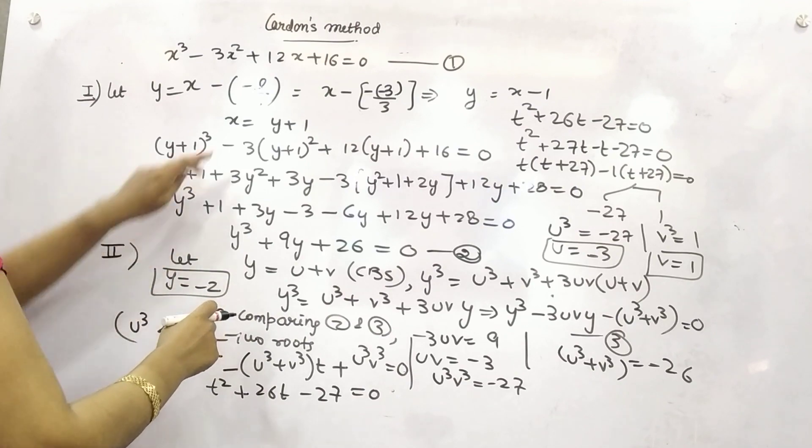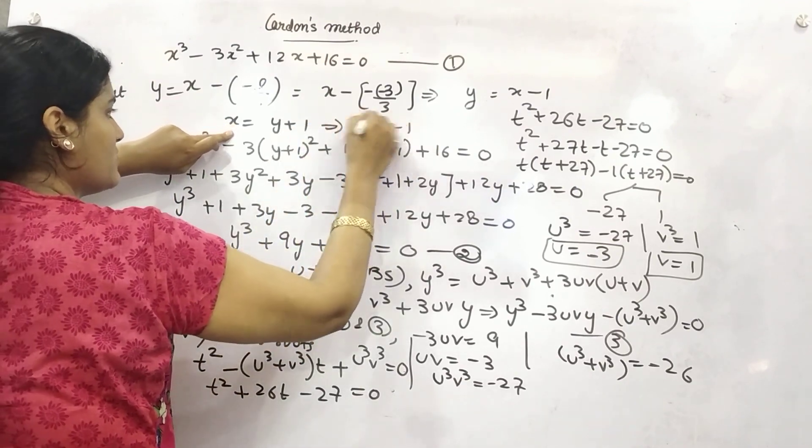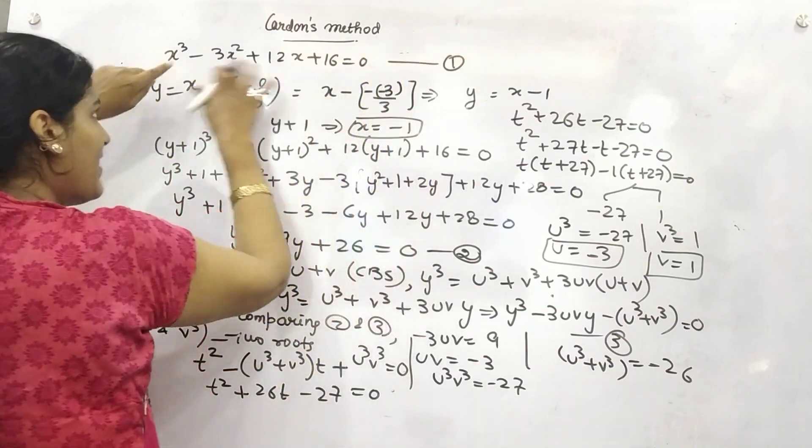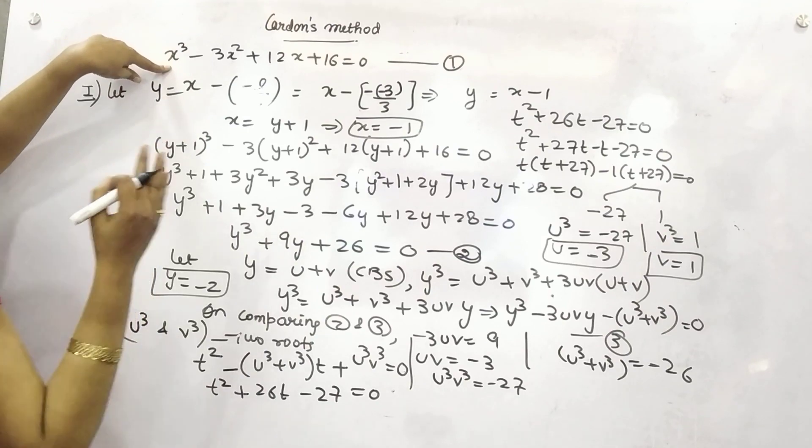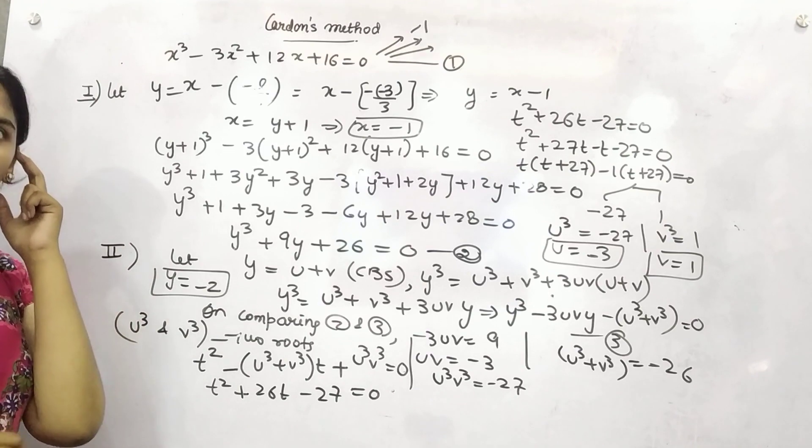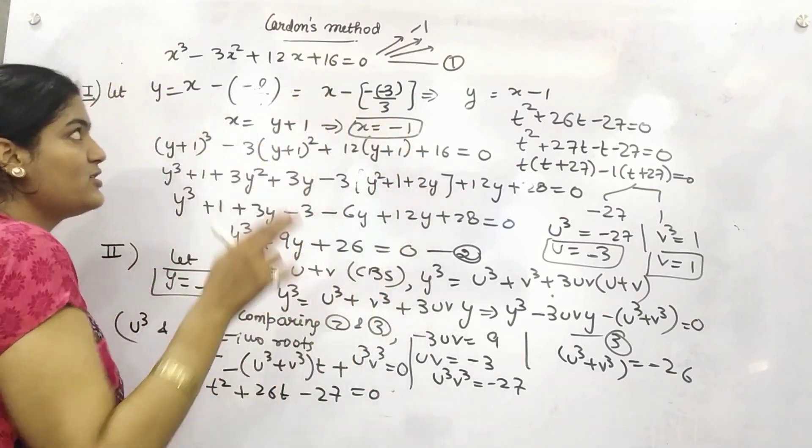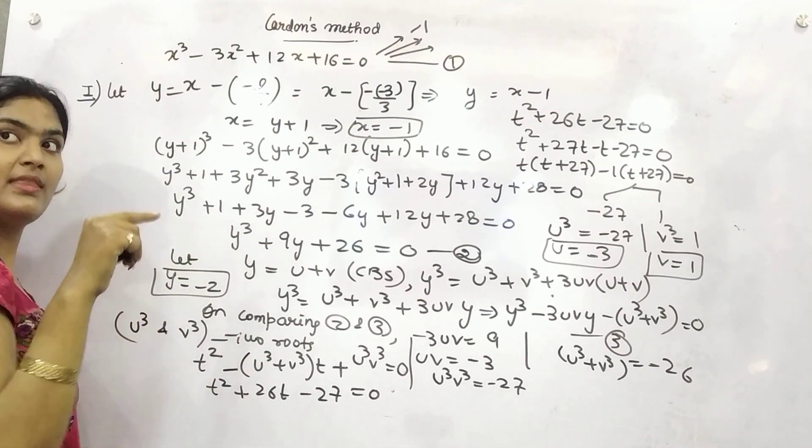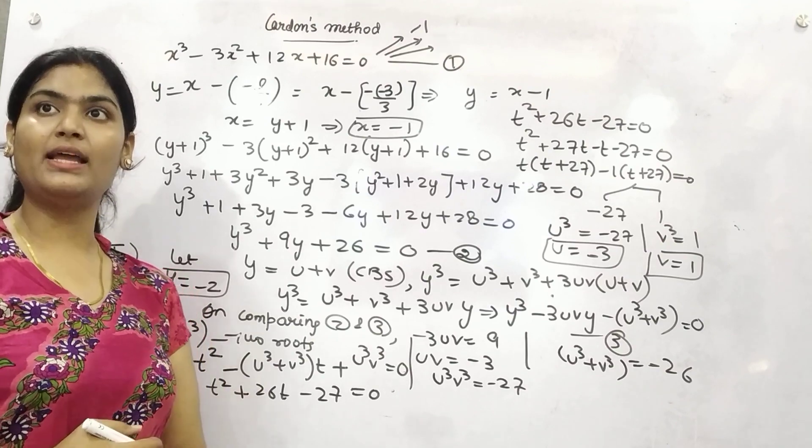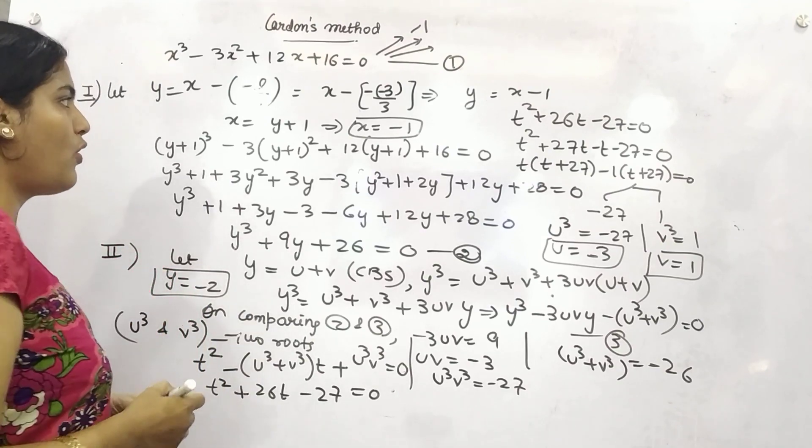So your y has become from here u plus v minus 3 plus 1 is minus 2. So if y is minus 2, so your x will become minus 2 plus 1 minus 1. Now your one root, the value of x. There are three roots of x. One root is minus 1. Let's see about other two roots. So you know, if x is equals to minus 1 is one of its root, then we know if we know one root, then we can find out other two by division method.